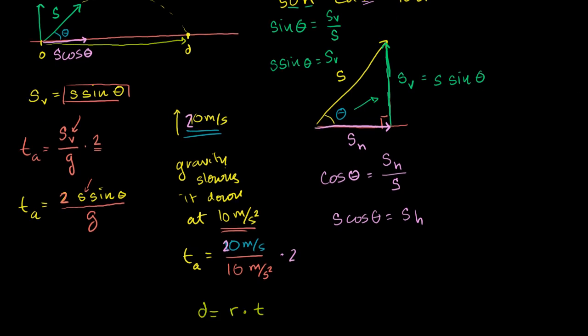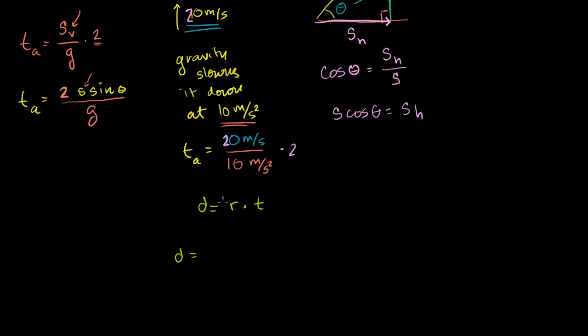So our rate is s cosine of theta. And how long will we be traveling at this horizontal speed? Well, we'll be going at that speed as long as we are in the air.